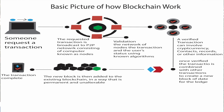That transaction request is broadcast to a peer-to-peer network consisting of computers called nodes. The nodes validate the transaction using algorithms. After validation, they verify the transaction and combine it with other transactions to create a new block. That block is then added to the existing blockchain as a permanent record.